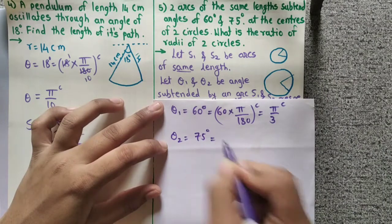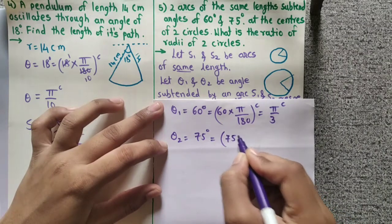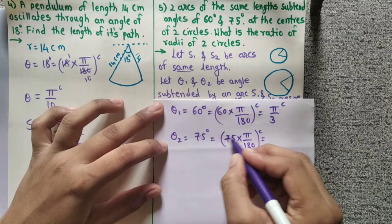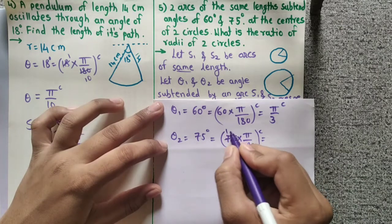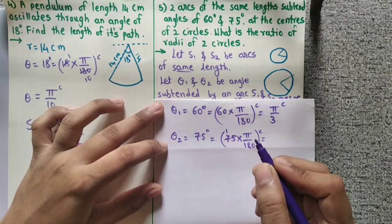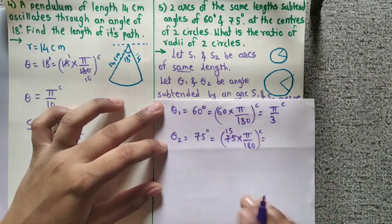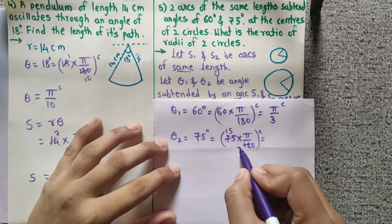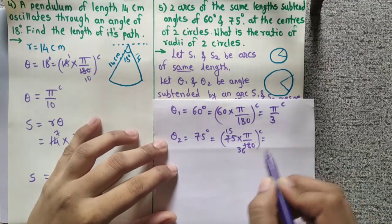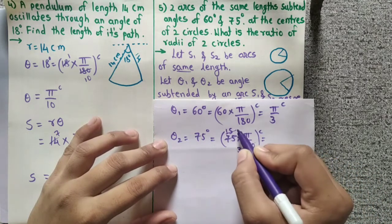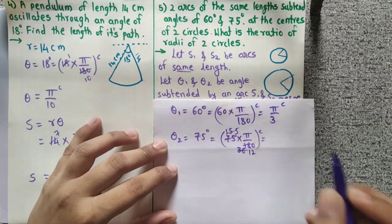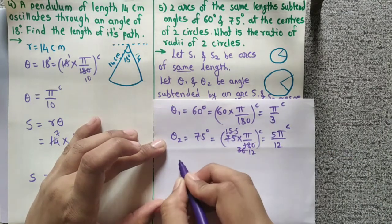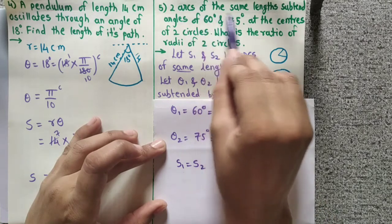Now theta2 is 75 degrees. We convert 75 degrees: 75 into pi upon 180. Simplifying gives 5 pi by 12 radian. Now since S1 equals S2 — we have two arcs of the same length — so S1 equals S2.